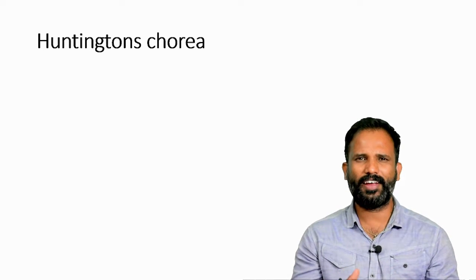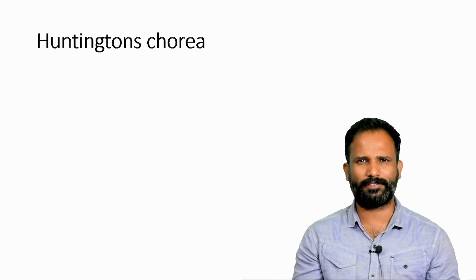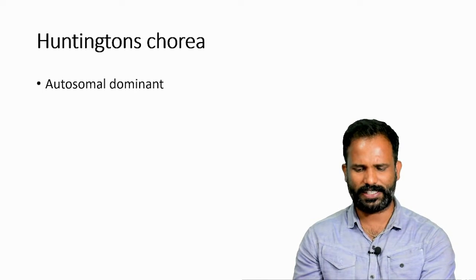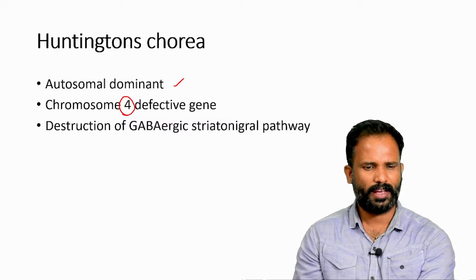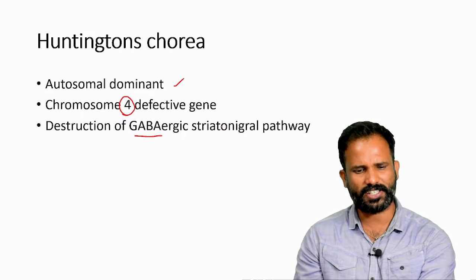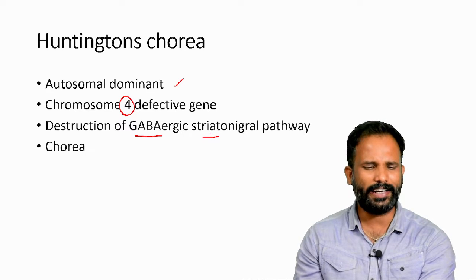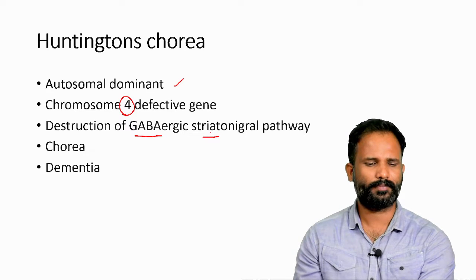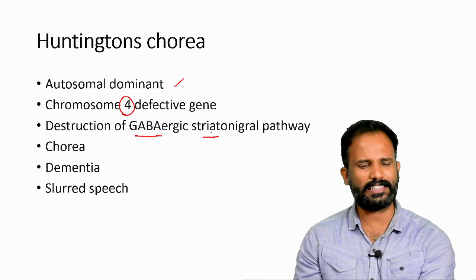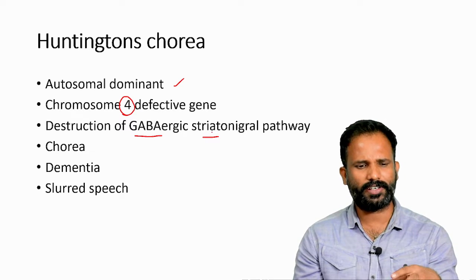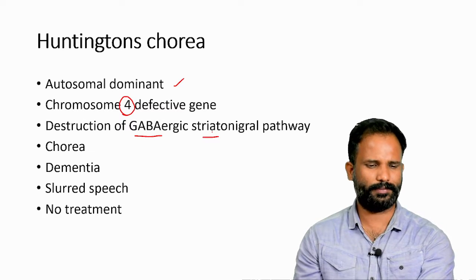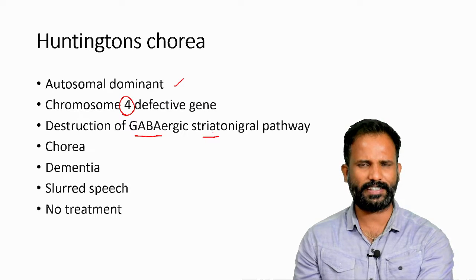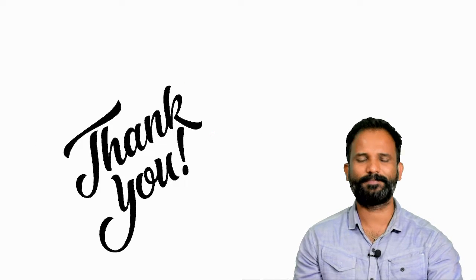Huntington's chorea is a similar disorder where the problem is with the striatonigral pathway, which uses GABA. It is autosomal dominant with the defect on chromosome 4. The defective gene causes destruction of the GABAergic striatonigral pathway. It presents with chorea, dementia, and slurred speech. Since Huntington's chorea involves a defective gene, it is not curable and there is no specific treatment.